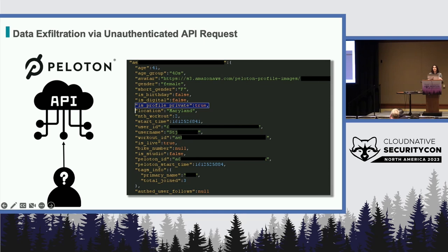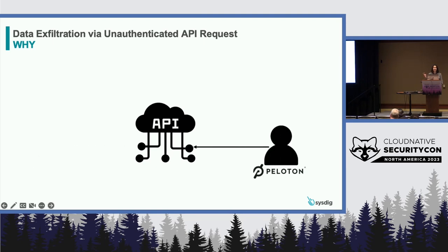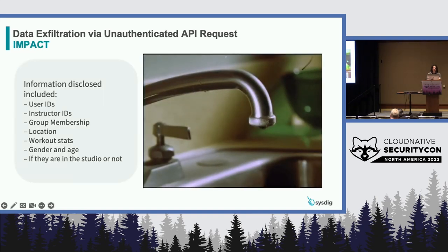Once this was reported to them, they got rid of the unauthenticated access and made it so that any authenticated user could access this API endpoint. But that wasn't a real fix, because it's free to create an account and become an authenticated user — as of that time, there were over three million Peloton authenticated users. So it was reported again that this wasn't actually fixing the problem, and then Peloton fixed the actual vulnerability. The impact: information could have been leaked, but because this was found by researchers who properly reported it, there don't appear to have been any public leaks of this data. However, this doesn't mean that somebody didn't collect this information for their own private use.